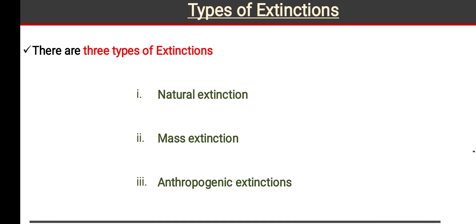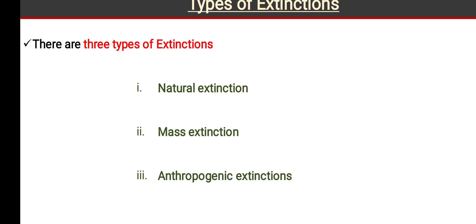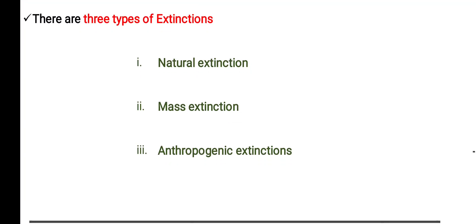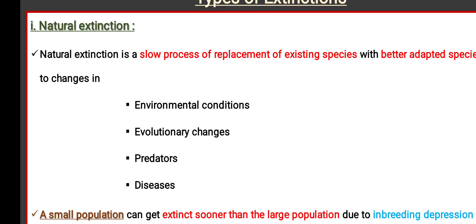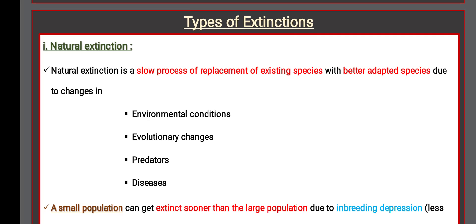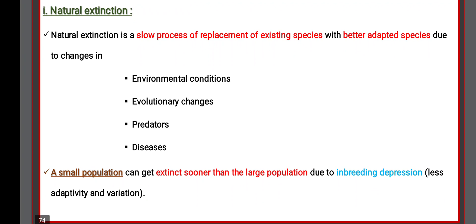There are 3 types of extinction. The first is Natural Extinction — a slow process of replacement of existing species with better-adapted species due to change in environmental conditions, evolutionary changes, predators, and diseases. A small population gets extinct sooner than a large population due to inbreeding depression.